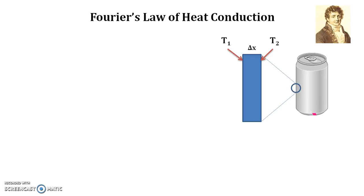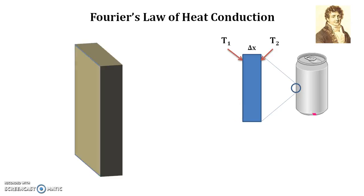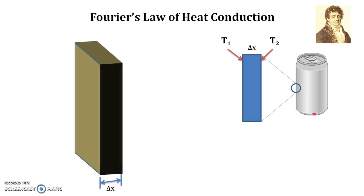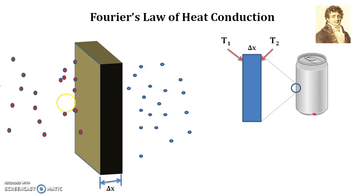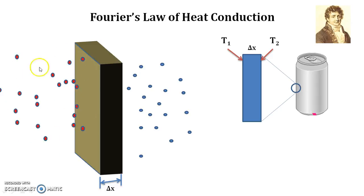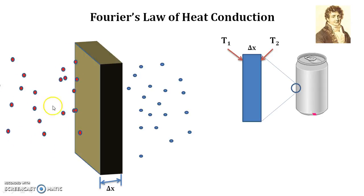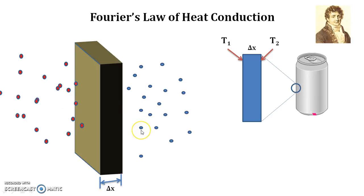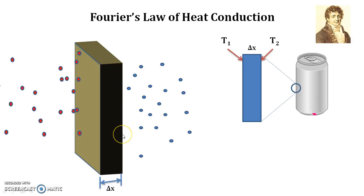The left face temperature and right face temperature of this can are T1 and T2. T1 is the temperature of the surface in contact with the room air, and T2 is the temperature of the surface in contact with the cold drink inside the can. In the three-dimensional view, the left face of the wall is in contact with the room air, which has higher temperature and hence higher average kinetic energy, as shown by the molecular motion.